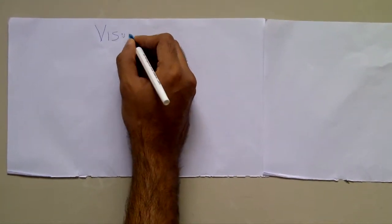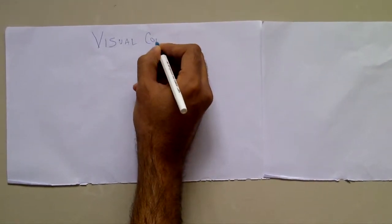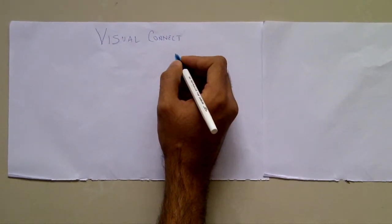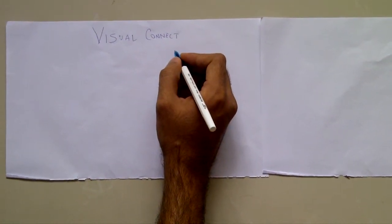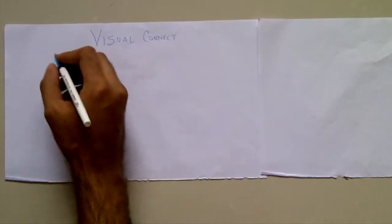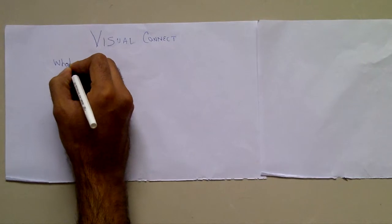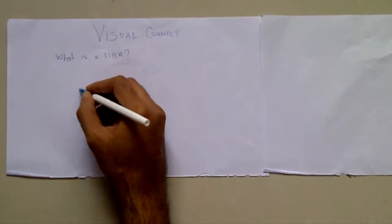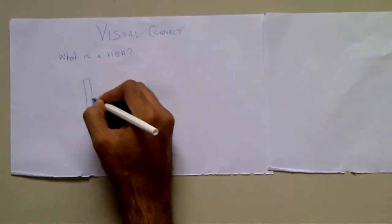Welcome to episode 2 of the Visual Connect series. In the last episode, we saw the ecosystem fit of a host bus and a converged network adapter and their major advantages. In today's episode, we look at what exactly is an HBA and what exactly is a CNA.